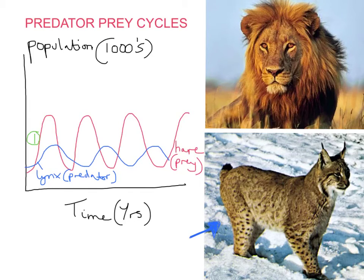Number two, the equivalent rise in predators. For number three, I'm looking at the peak here of the prey number.